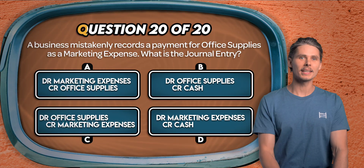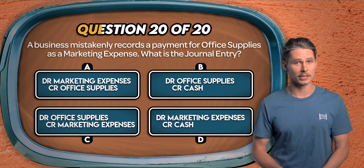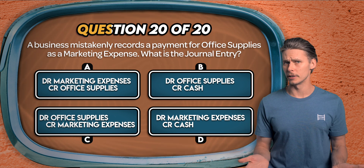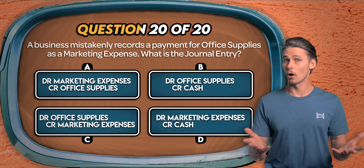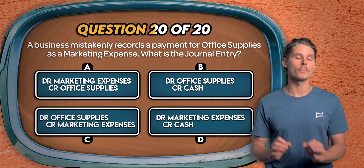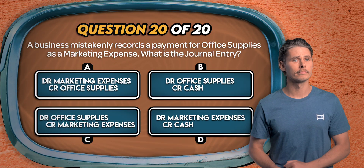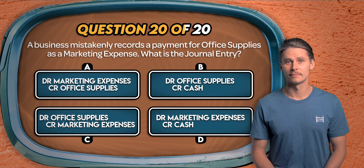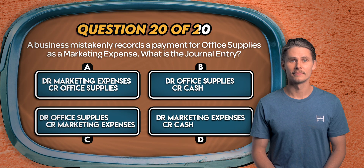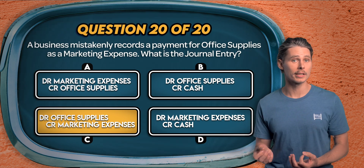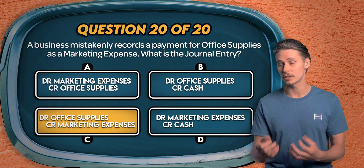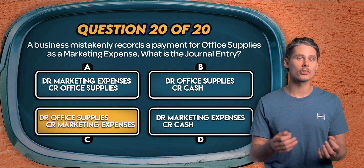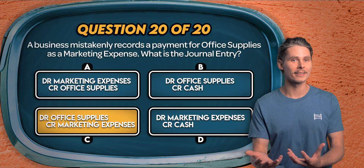Question 20. A business mistakenly records a payment for office supplies as a marketing expense. What's the journal entry? Is it debit marketing expenses credit office supplies, debit office supplies credit cash, debit office supplies credit marketing expenses, or debit marketing expenses credit cash? It's C. This error has overstated marketing expenses and understated office supplies. To fix it, we debit office supplies to record the cost in the correct account, and credit marketing expenses to remove the amount that was incorrectly recorded there.